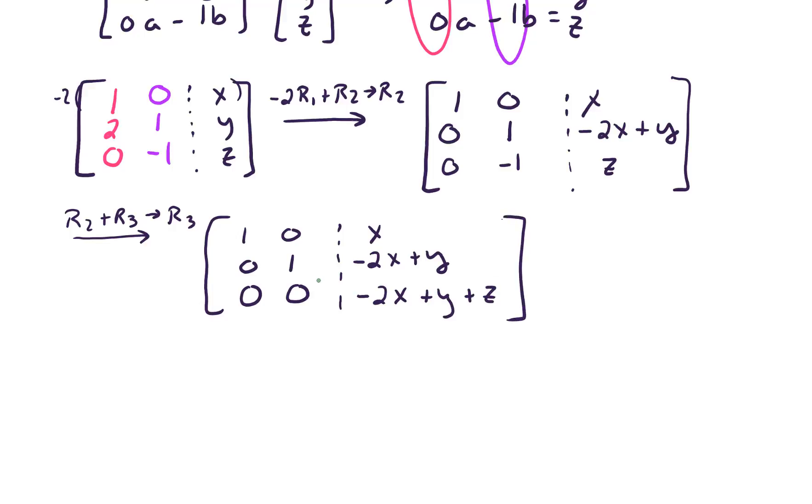And notice what this third row is saying. What this is saying is that we can't build vectors unless this negative 2x plus y plus z equals 0.